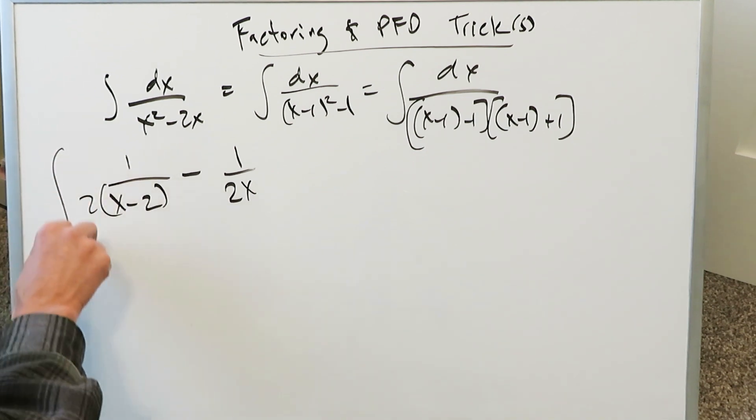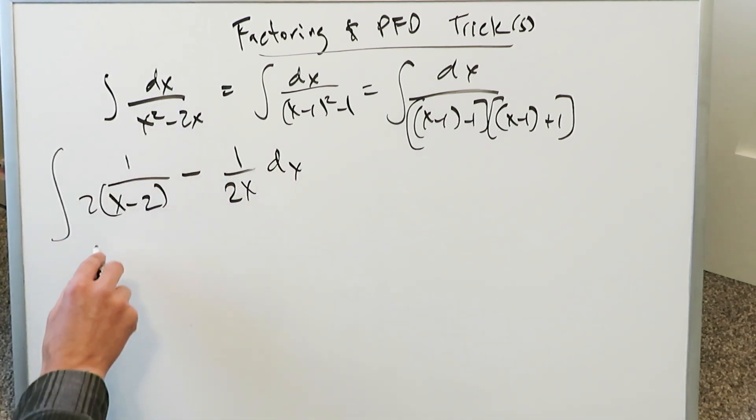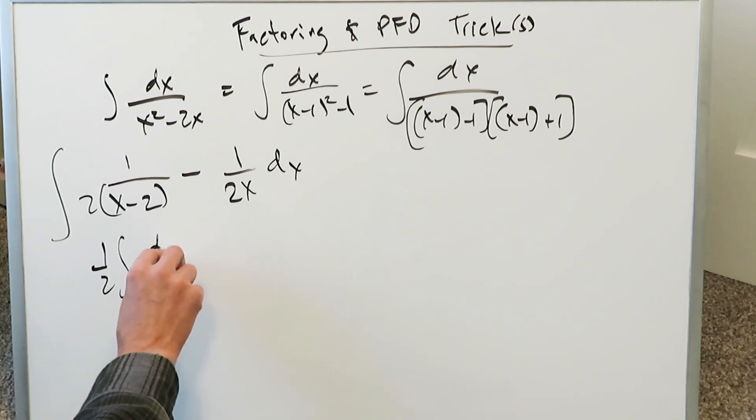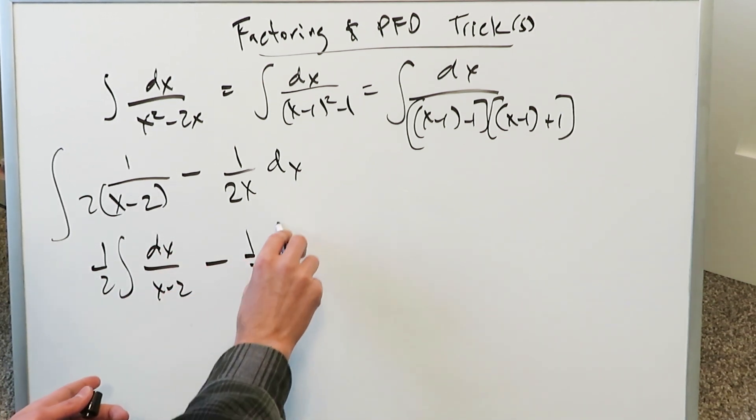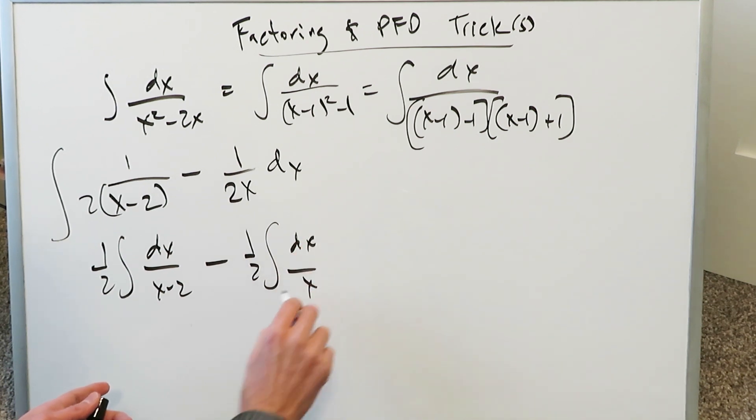Now you're looking at the integral of this, which is easy. Look at it separately. You're looking at 1 over 2 integral dx over x minus 2 minus 1 over 2 integral dx over x. When you do this right here, you have 1 over 2 natural log x minus 2 anti-derivative come out from here. You know that.